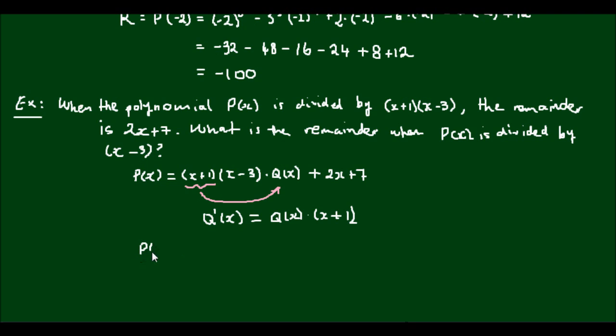So I'm going to rewrite P of X is equal to X minus 3 times Q prime X plus 2X plus 7. I probably should have used a different letter here instead of the prime because you can easily confuse that with differentiation. But please be aware that this is not differentiation. This is just another representation of the quotient.